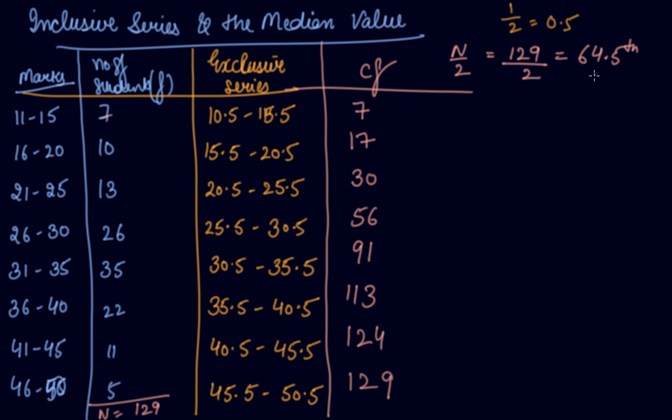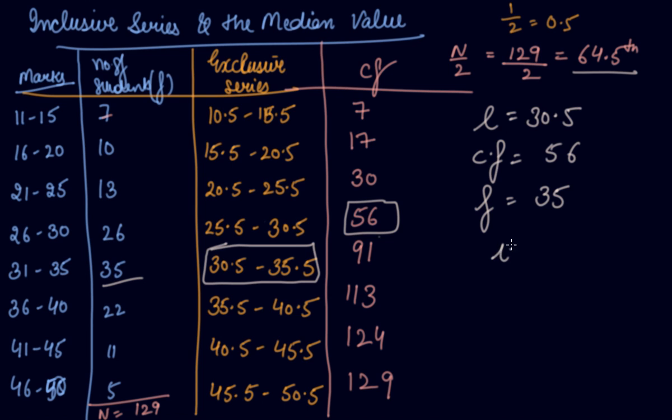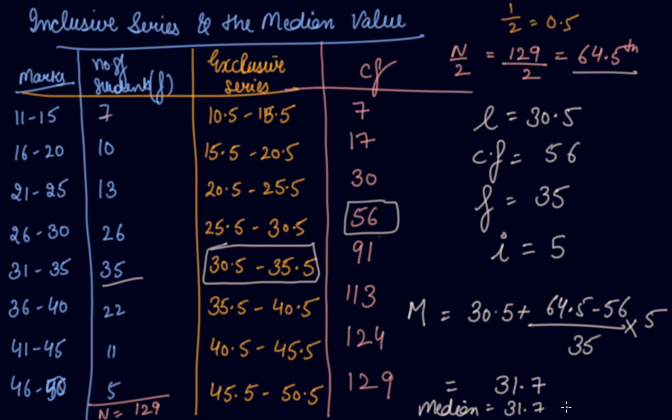Now we have to find out the median class. 64.5 does not come in 56, it comes in 91 cumulative frequency. So this is your median class. We have got L which is 30.5. CF is the preceding frequency of the class that is 56. F is the frequency of the class that is 35. I is the difference between the class that is 5. So we can find out the median: 30.5 plus (n by 2 which is 64.5 minus 56) divided by F (35) into I (5). So the answer is 31.7.